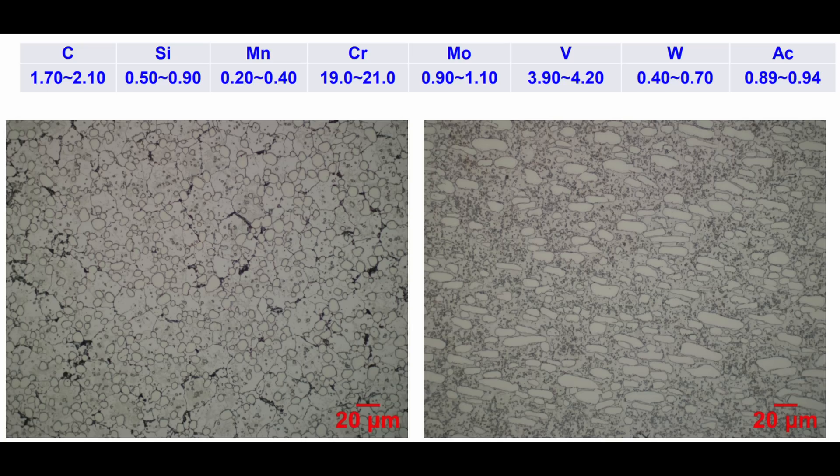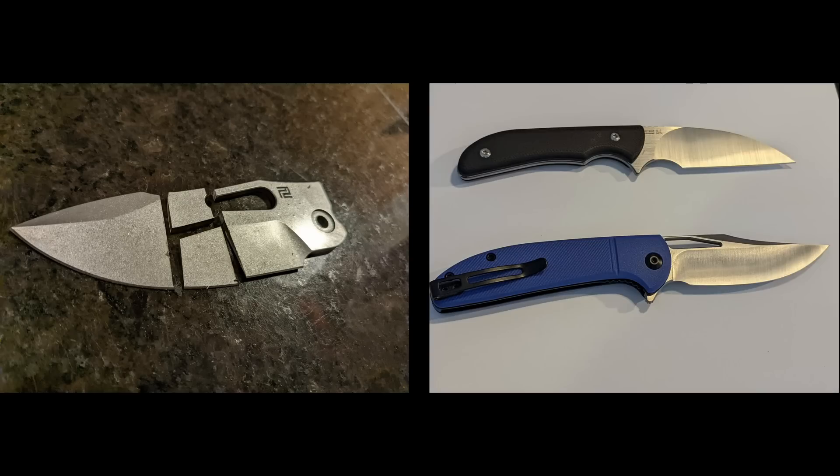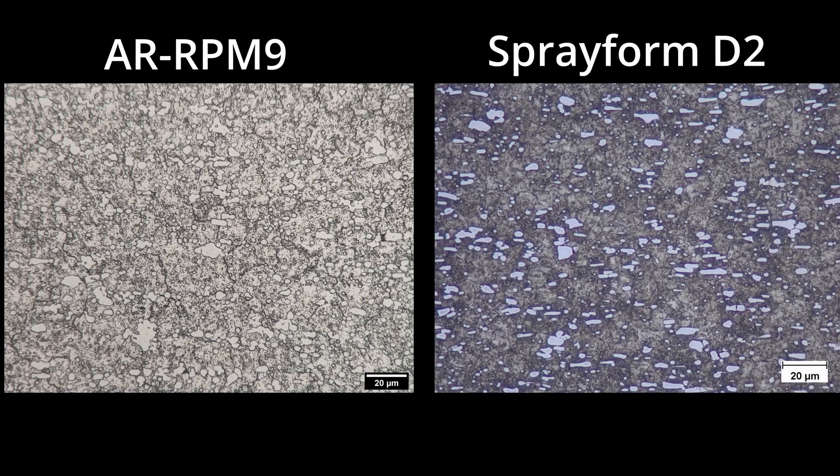So our big question was, is AR-RPM9 actually powder metallurgy? So Sean Houston of Triple B Handmade and I, we bought a couple of knives from Artisan Cutlery to look at the microstructure. We cut up those knives and we looked at the microstructure. And those carbides are too big to be powder metallurgy. And looking at a similar magnification to some spray form D2, the carbides of the spray form AR-RPM9 are similar. There's a couple that look a little bigger to me than I would think with spray form.